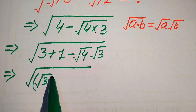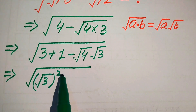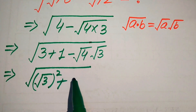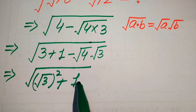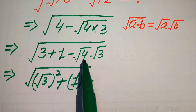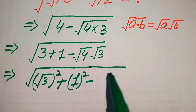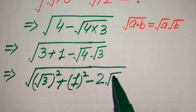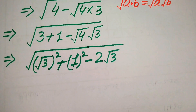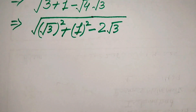For this, we rewrite 3 as (√3)² — so the square and the square root cancel and we get 3 only — and we write 1 as 1². We also note that the square root of 4 equals 2, multiplied by the square root of 3.